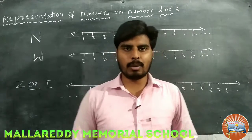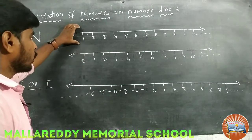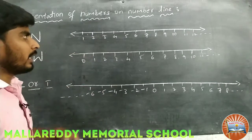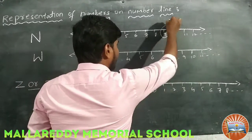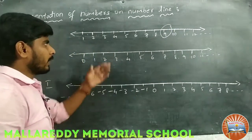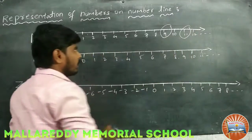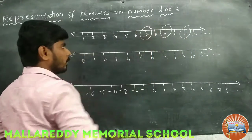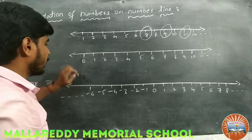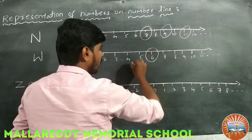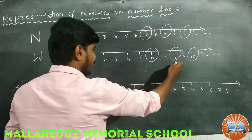Let us start with the natural number line. If I want to represent 9 on the number line, we can simply round up like this. If I want to represent 11, like this. 7, we can simply round up the numbers. Similarly, whole numbers — we can represent by rounding up the numbers. This is 6, 8, 10.